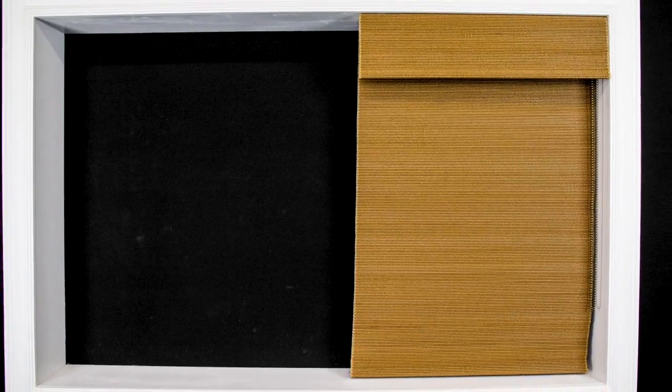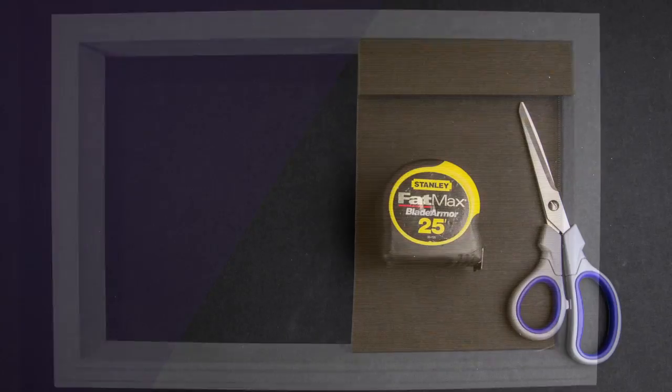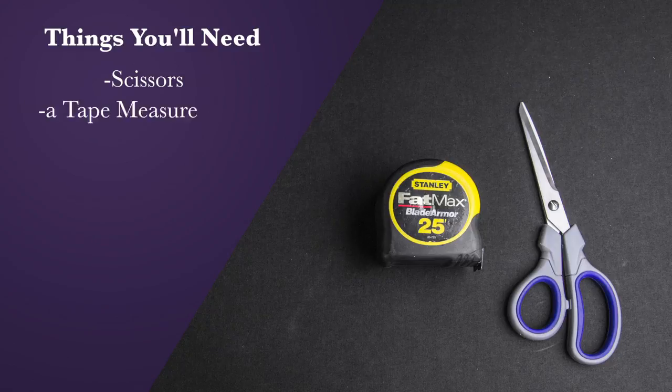This repair will cover restringing a woven wood shade with a clutch lift system. The tools you'll need for this repair are scissors and a tape measure.